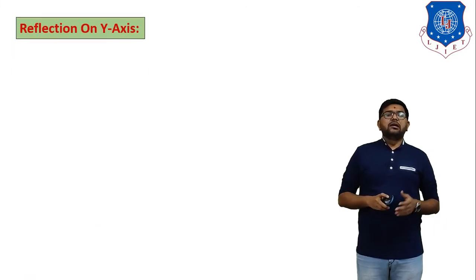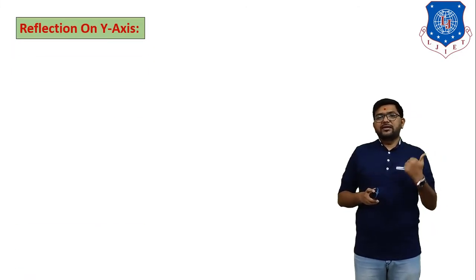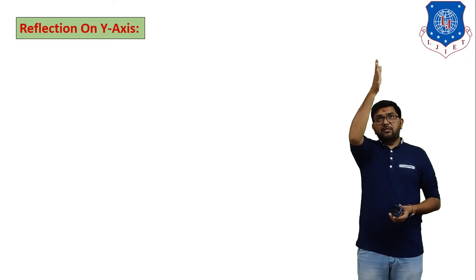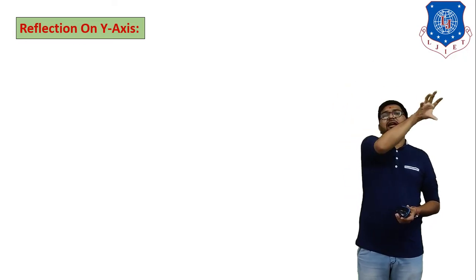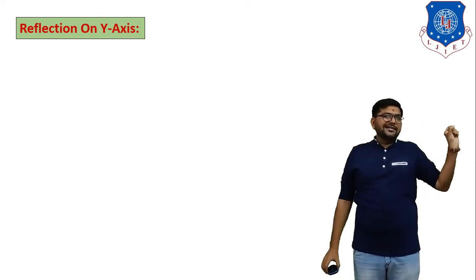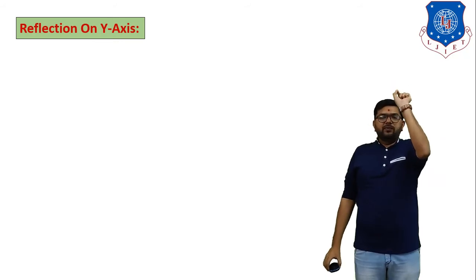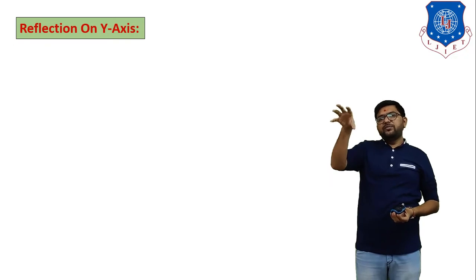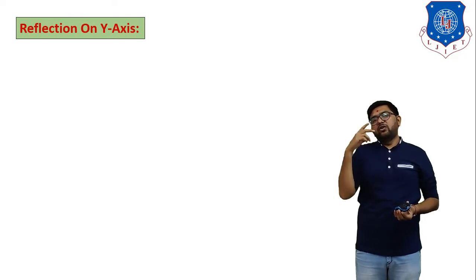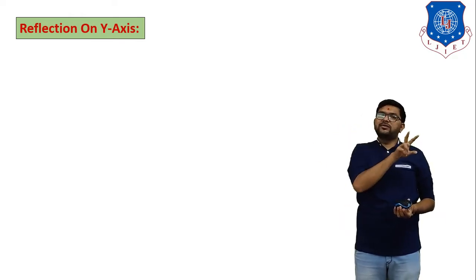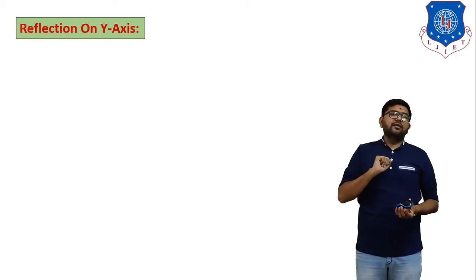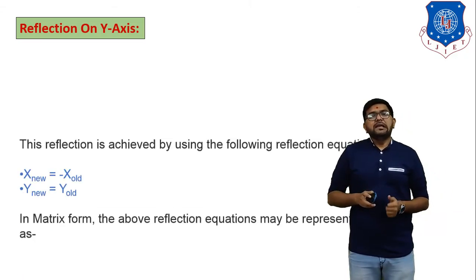Now we derive the reflection about the y-axis. If any object in the first quadrant is reflected about the y-axis, the reflection is generated in the second quadrant. In the second quadrant, the x-coordinate is negative but the y-coordinate is positive. So when reflecting about the y-axis, we change the sign of the x-coordinate, while the y-coordinate remains positive in both the first and second quadrants.